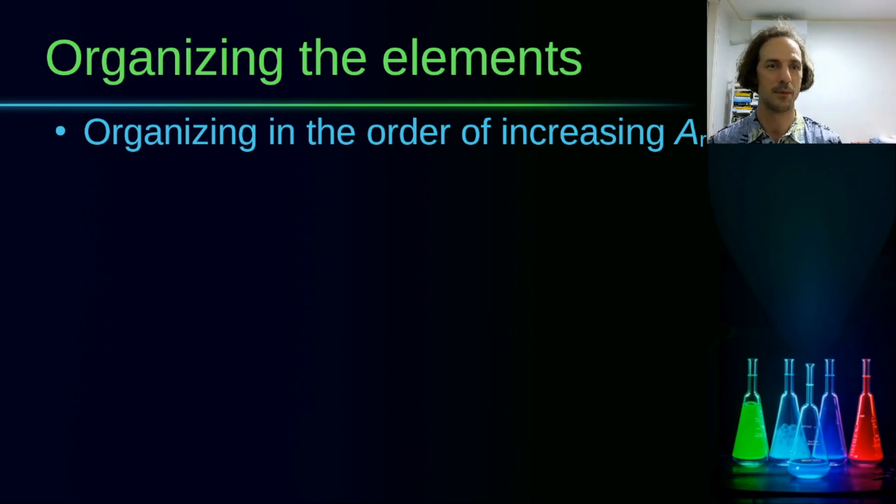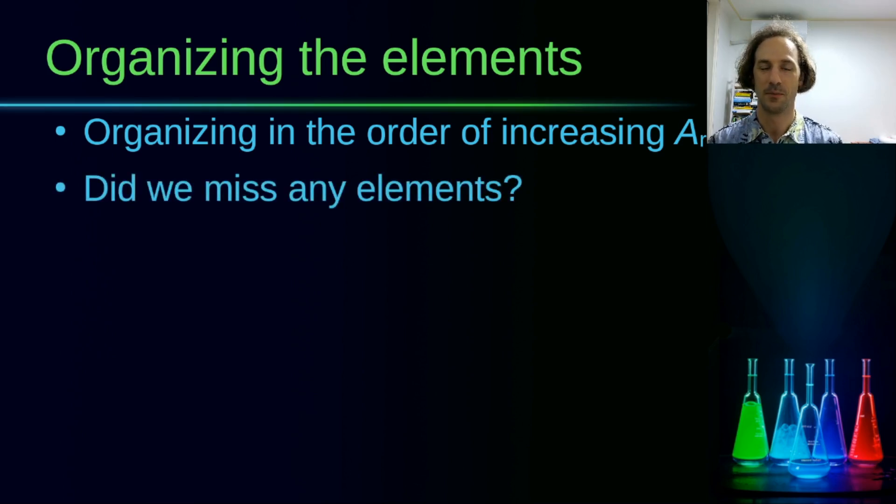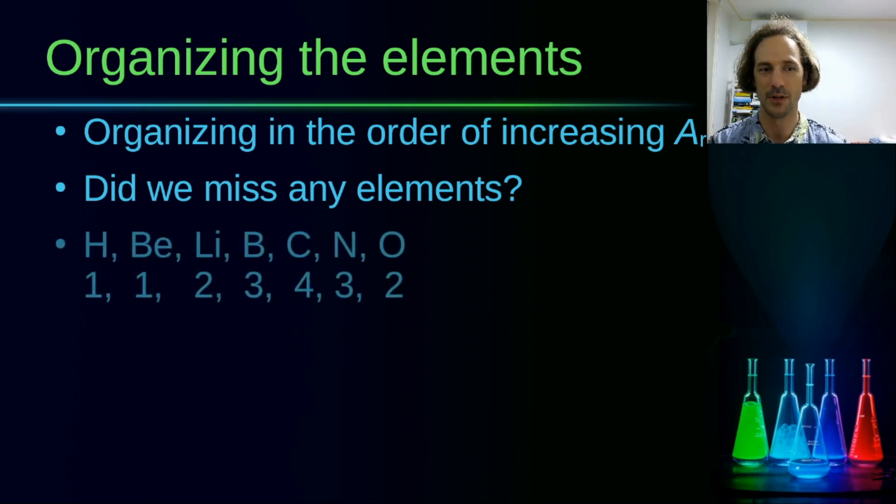Organizing them in increasing order was one of the simplest things to do, but it was not really easy to tell based on just the relative atomic mass whether any elements were missed that are yet to be discovered, or were all the elements discovered already. They used hydrogen, the element with the smallest atomic mass, as the reference for the relative atomic mass of the other elements. But the relative atomic mass in itself did not give enough information to be able to find out whether any elements were missed or not.